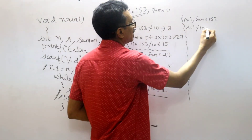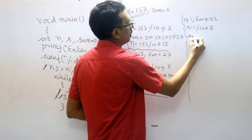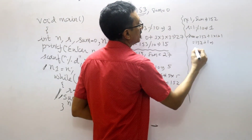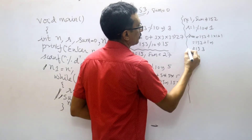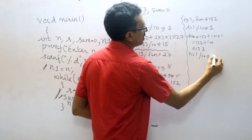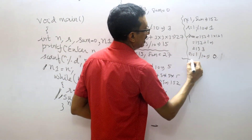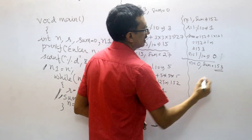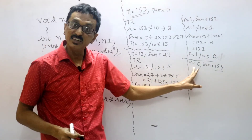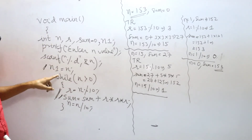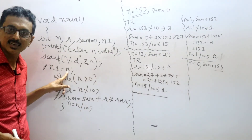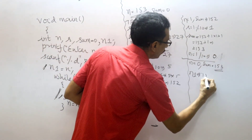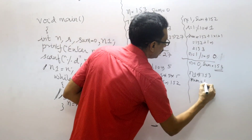Now n is 1, sum is 152. Condition 1 greater than 0 is true. r equals 1 modulus 10, which equals 1. Sum equals 152 plus 1 into 1 into 1, which equals 152 plus 1, which equals 153. n equals 1 by 10, which equals 0.1, truncated to 0. Now n is 0, so the while loop ends. n1 equals 153 and sum equals 153.